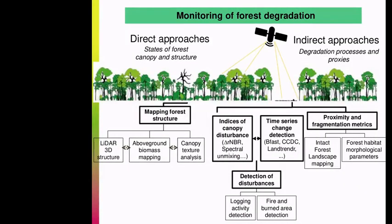Different methods exist to measure forest degradation. Most of them use optical data. Direct approaches focus on characterizing the state of forest canopy and structures. These methods are usually based on very high spatial resolution data such as radar or UAV data, and aim to measure the biomass level or the canopy structure using textural analysis.